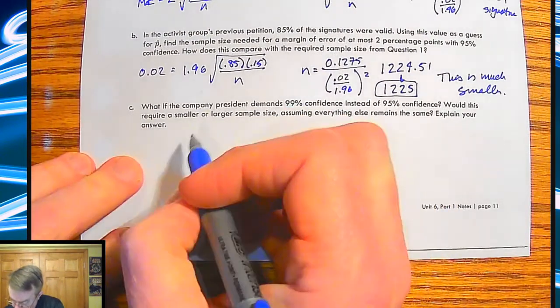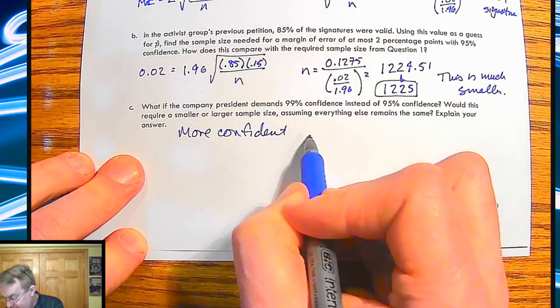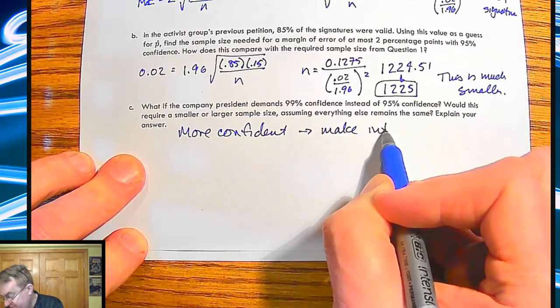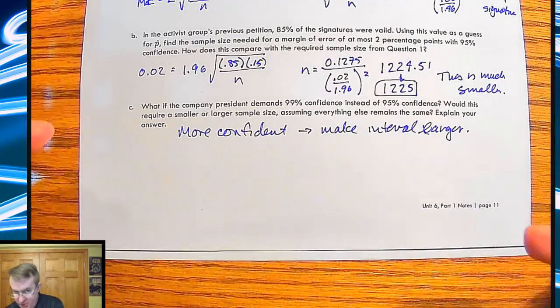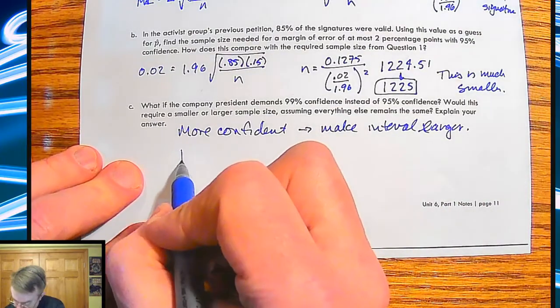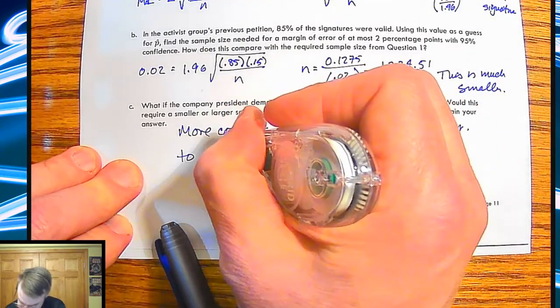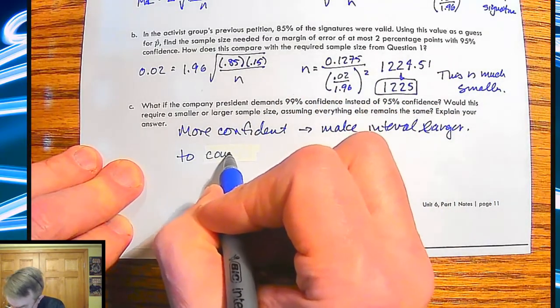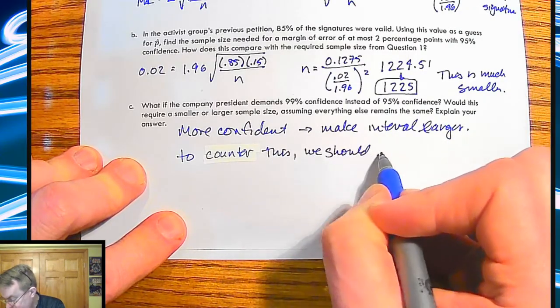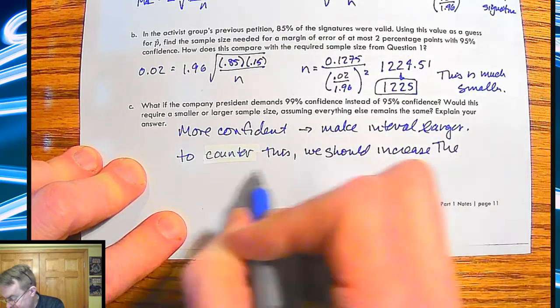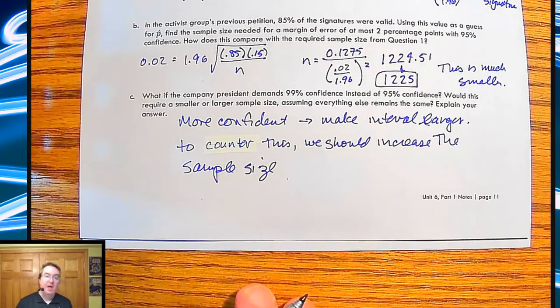So remember, if we're going to be more confident, that's going to make the interval larger. So if we're making the interval larger, the way we combat that is to make the sample size smaller. Let's say counter-combat sounds all aggressive. So to counter this, we should increase the sample size. There we go. Confidence intervals.